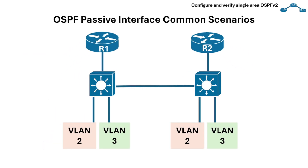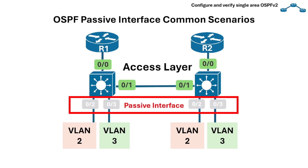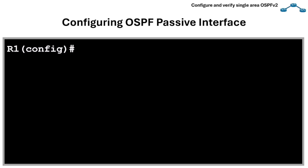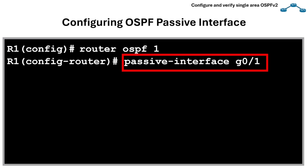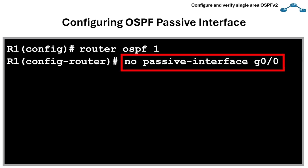Passive interfaces are commonly used for access networks — interfaces connecting to PCs or switches with no routers. To configure OSPF passive interface: first, use the command router ospf 1 to enable the OSPF process with process ID 1. Then use the command passive-interface GigabitEthernet0/1 to make that interface passive — no OSPF neighbors can form on this interface. To make all interfaces passive by default, use the passive-interface default command. To re-enable OSPF hellos on a specific interface, use the no passive-interface GigabitEthernet0/0 command on the interface where you actually want neighbors to form.